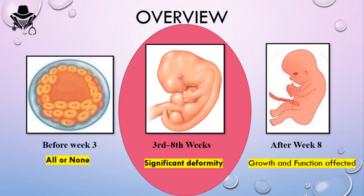After week eight, the organs have developed and will start to grow and acquire their functions gradually. Any agent present after week eight will have growth and functional effects on the fetus. The most dangerous period is therefore the period between week three and week eight.